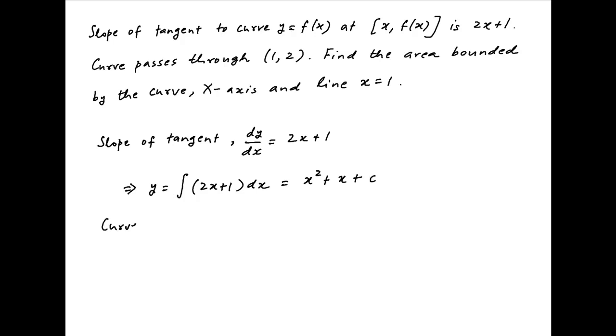Now we are given that the curve passes through the point (1, 2), therefore the point (1, 2) will satisfy the equation of the curve which implies that 2 is equal to 1 plus 1 plus c and therefore c is equal to 0.